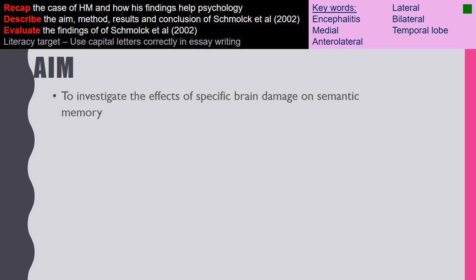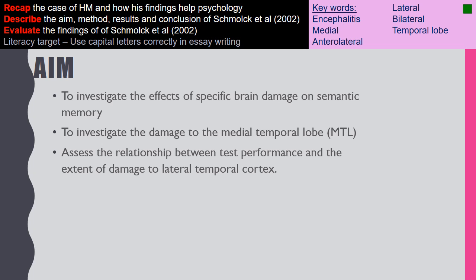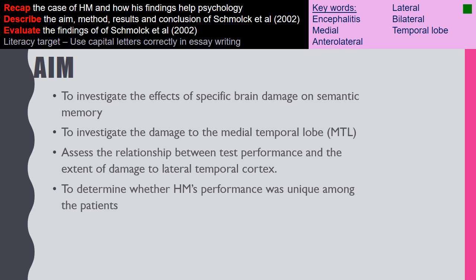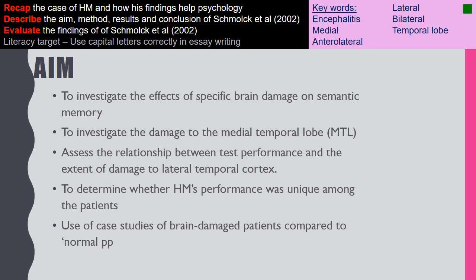There are several aims of Schmollock's study. The first was to investigate the effects of specific brain damage on semantic memory, and also to investigate damage of the medial temporal lobe. Further aims were to assess the relationship between test performance and damage to the lateral temporal cortex, to determine whether HM's performance was unique among patients, and to use case studies of brain-damaged patients compared with normal patients to draw conclusions about how brain damage affects memory.